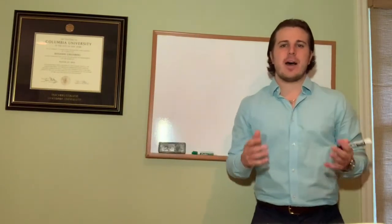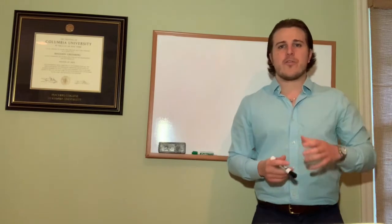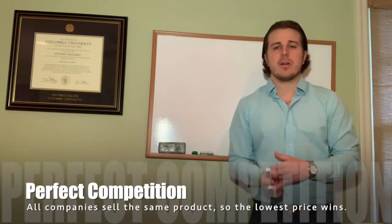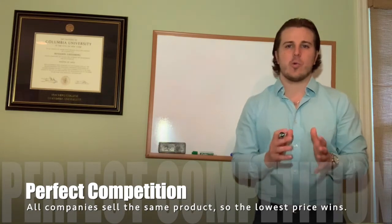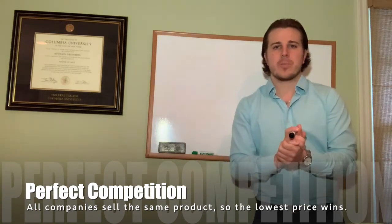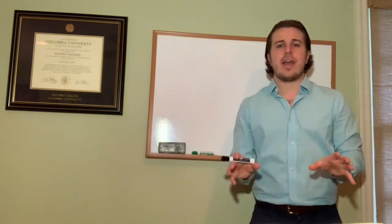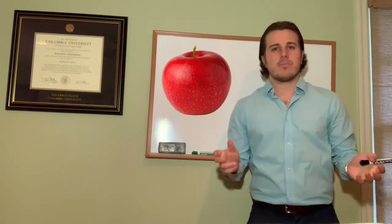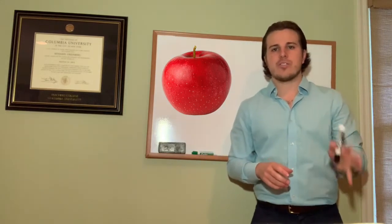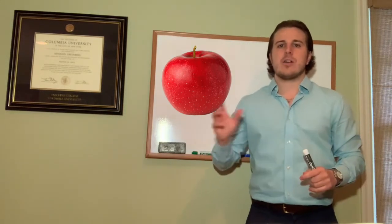So in economics, there are four different types of competition that exist. The first one is perfect competition. Now, some economists argue that this is only a theory and doesn't truly exist in the real world, but I'll give you an example. Let's say there are two stands next to each other that are both selling apples. They come from different farms, but they're next to each other. One sells their apples for a dollar and one sells their apples for 50 cents.